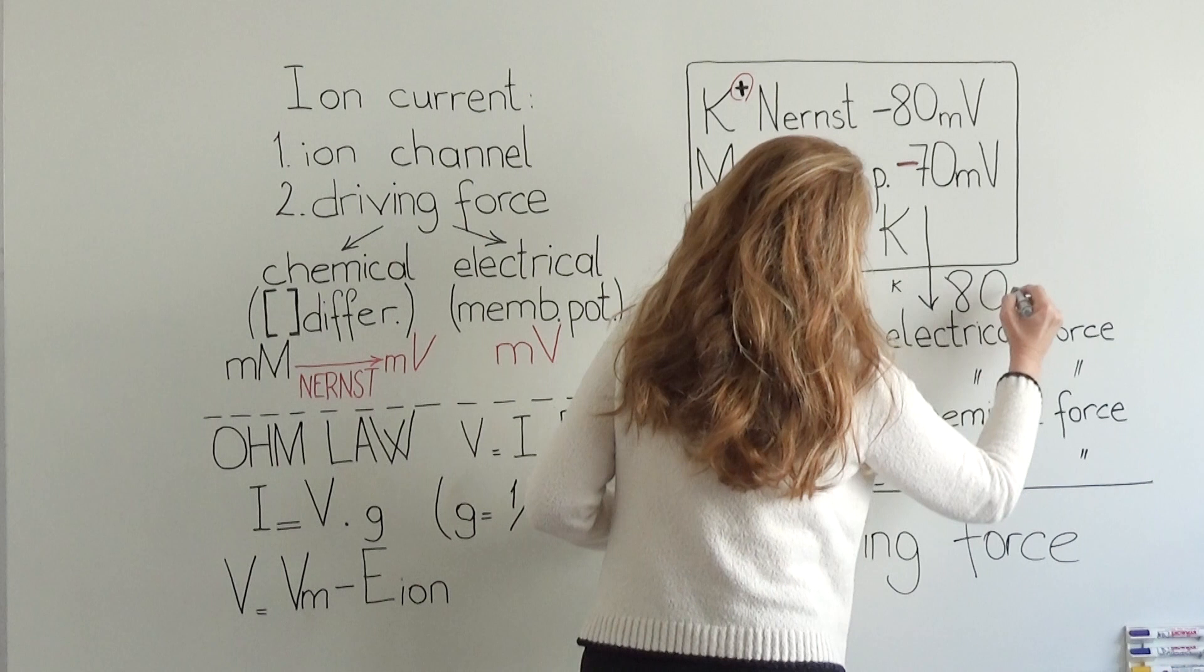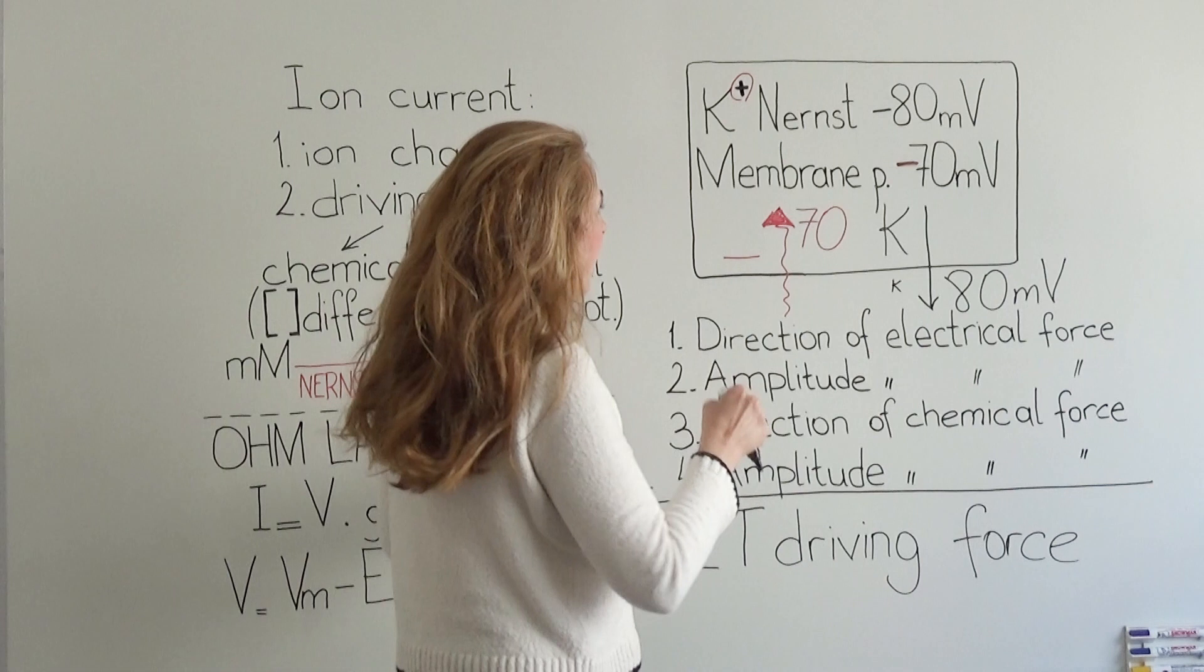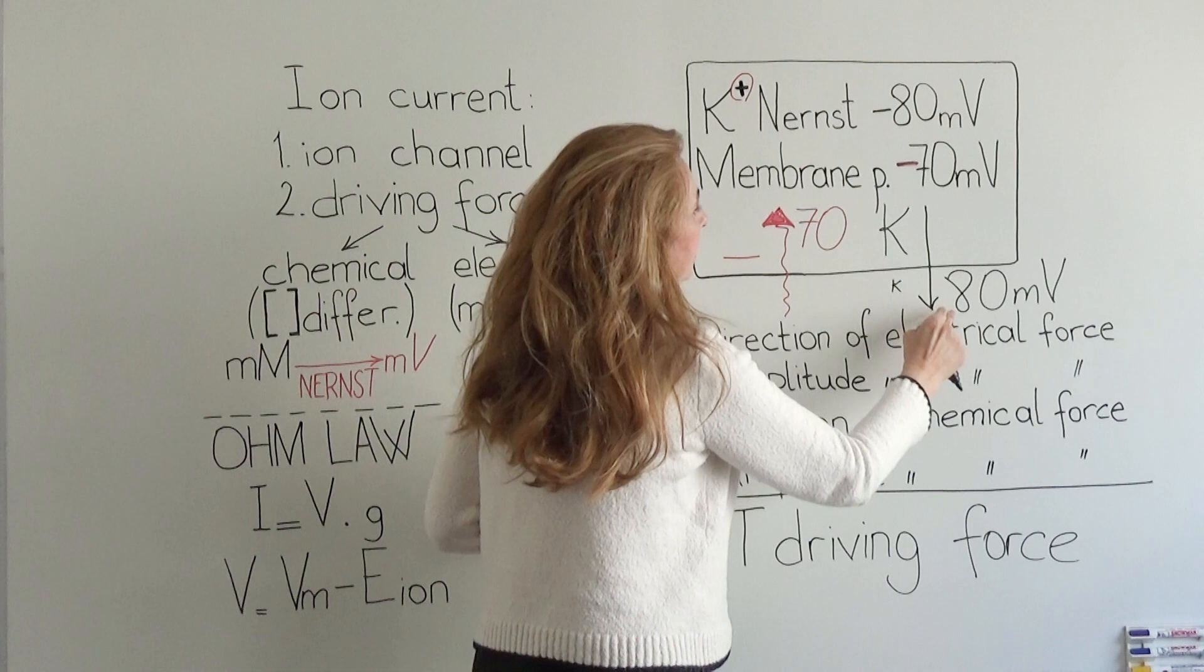So the second force is pushing potassium out of the cell. Now we have a 70 millivolt force pushing potassium in and an 80 millivolt force pushing potassium out.